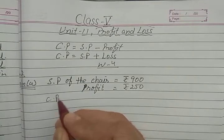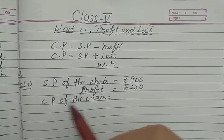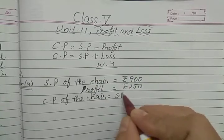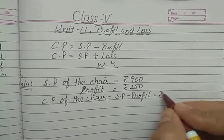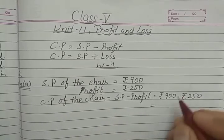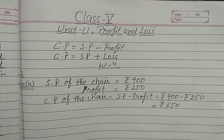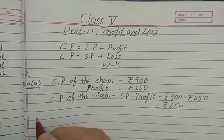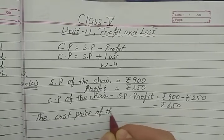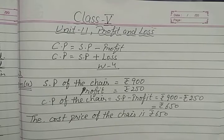Solution A: Selling price of the chair is rupees 900, and profit is rupees 250. To find the cost price when selling price and profit are given, we subtract: cost price equals selling price minus profit, that is 900 minus 250 equals rupees 650. Thus the cost price of the chair is rupees 650.